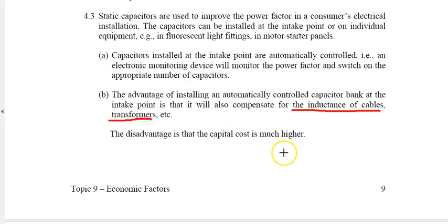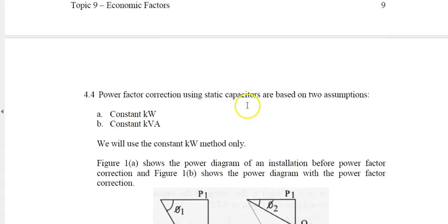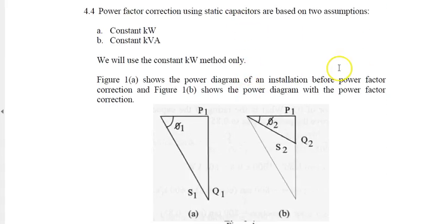Of course, the disadvantage of this extra overhead is the higher cost. Power factor correction using static capacitors is based on two assumptions: constant kW or constant kVA. We'll use the constant kilowatt method. Figure 1a shows the power diagram of an installation before power factor correction.